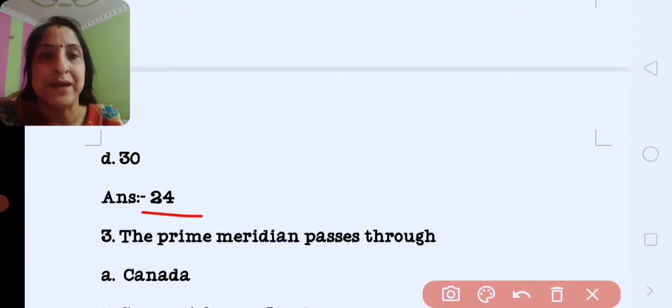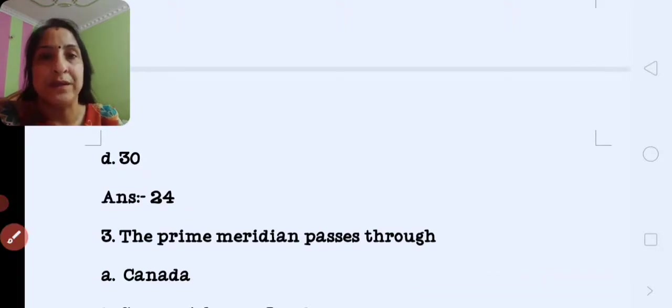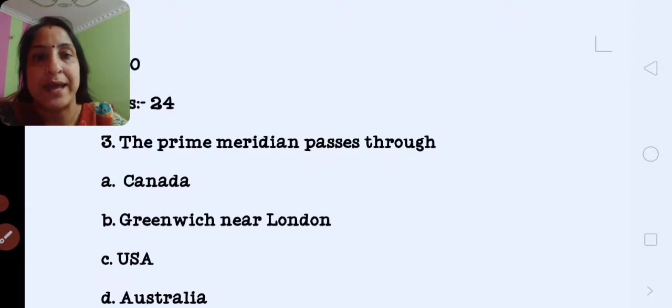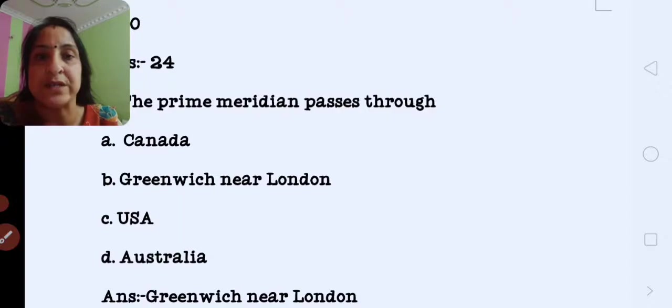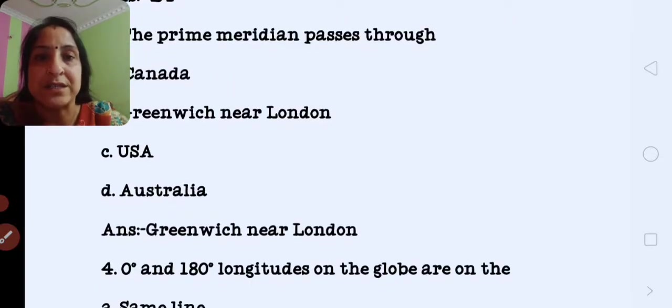Next, the prime meridian passes through: Canada, Greenwich near London, USA or Australia. The correct answer is Greenwich near London.